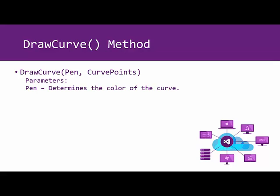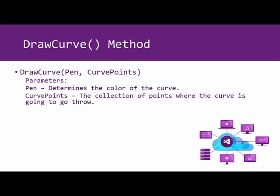The parameters are the pen, which determines the color of the curve, and the curve points. It's the collection of the points where the curve is going to go through, or the array, as whatever you like to call it.